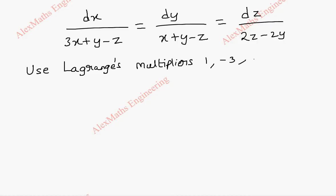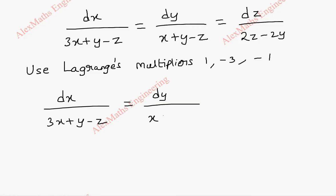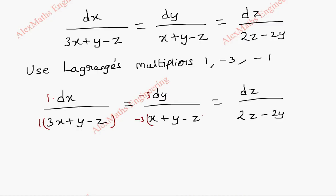Let's copy the original terms as they are. I am going to use a multiplier: first term is copied, second term is copied, and the last term is also taken down. Using this multiplier, we multiply 1 with both numerator and denominator, minus 3 with both numerator and denominator, and minus 1 with both numerator and denominator.